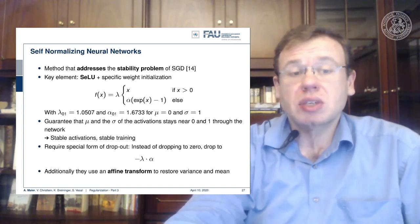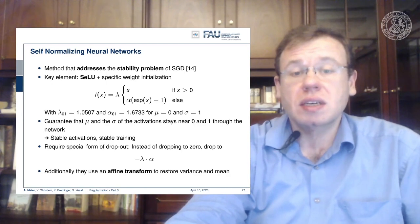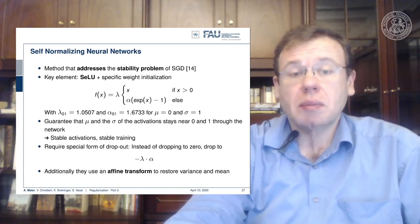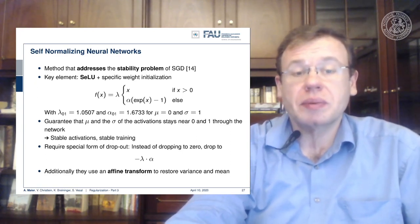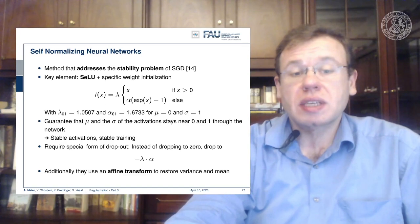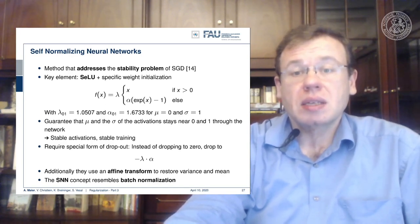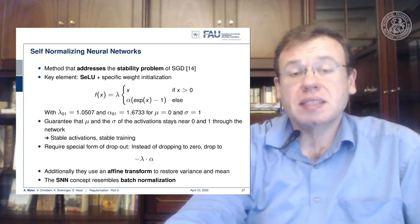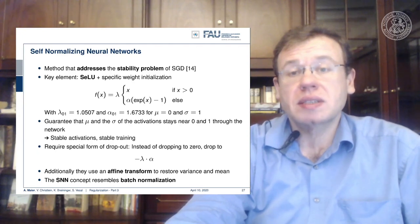One thing that has to be changed is the dropout procedure. We'll talk about dropout in a couple of slides. But here, instead of dropping to zero, you have to drop to minus lambda times alpha. And additionally, they use an affine transform to restore the variance and the mean. So this self-normalizing neural network concept in some extent also resembles the batch normalization.